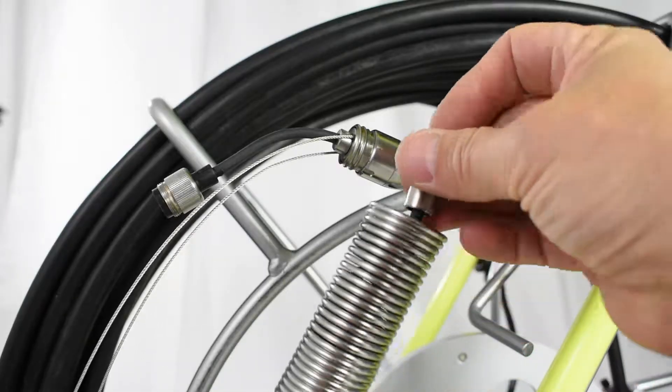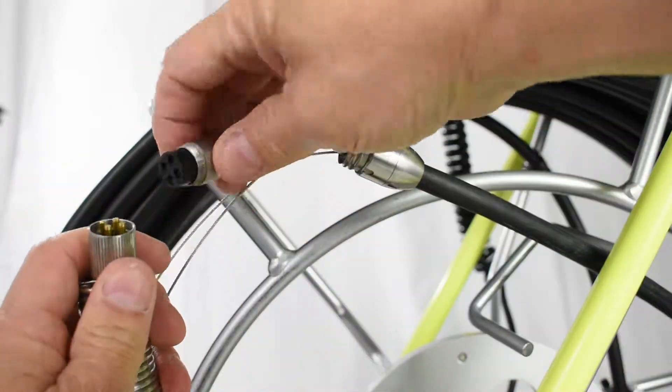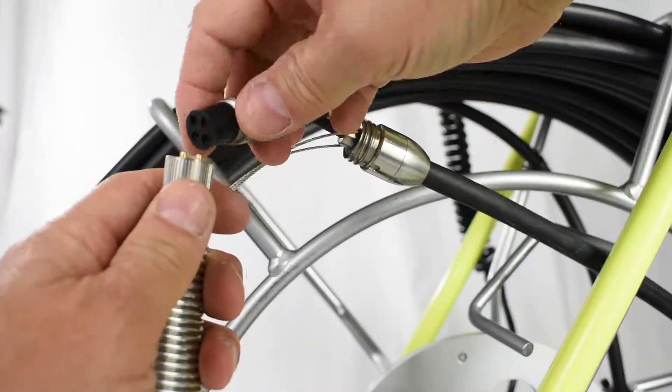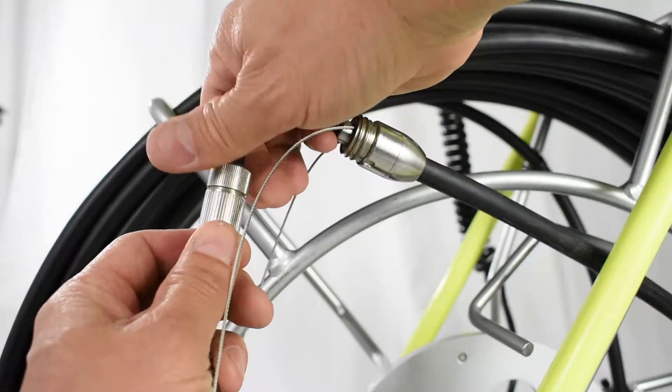Insert the male end of the sonde in the wide end spring, then shake it to reveal the sonde end. Line up the three large holes and one small hole, plugging the male into the female end and twist on.